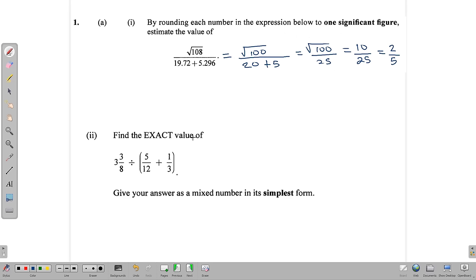The next part says we have to divide 3 and 3 eighths by 5 twelves plus a third. So let's write that down. 3 and 3 eighths divided by 5 twelves plus a third. Now we can rename this one third so that it has a denominator of 12 by multiplying this denominator by 4. 4 times 3 would give us 12 and 4 times 1 gives us 4.